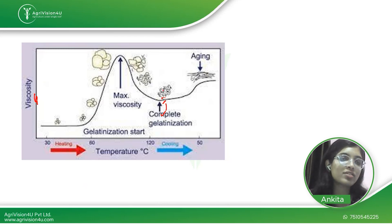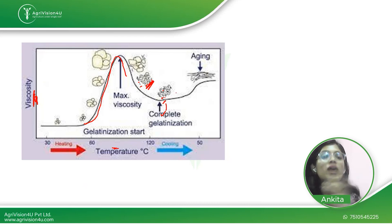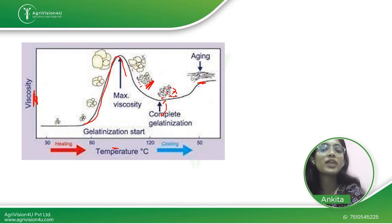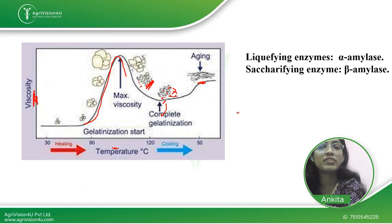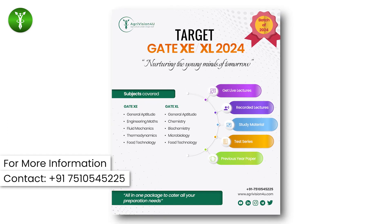From the viscosity-temperature graph: as temperature increases, gelatinization takes place; when heating stops, starch molecules come back together and bind — this is the aging phase — followed by retrogradation. Regarding enzymes: alpha-amylase is the liquefying enzyme and beta-amylase is the saccharifying enzyme — always remember this distinction.